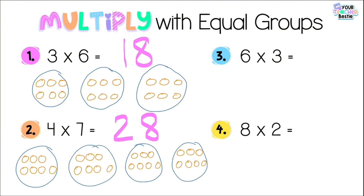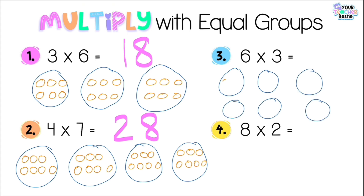Number three: six times three, or six groups of three. This looks similar to number one — three times six — but the factors are flipped, so I wonder if we'll get the same answer. I'm going to draw six groups and put three objects in each: one, two, three — repeated six times. Skip counting by three: three, six, nine, twelve, fifteen, eighteen. Eighteen is the product! And I got the same answer. This is the commutative property — we can flip the factors and still get the same answer, even though the representations look different.